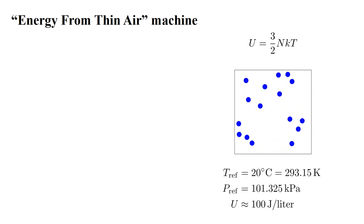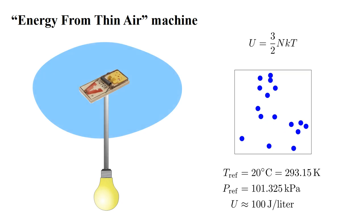At twenty degrees Celsius, in standard atmospheric pressure, this works out to around one hundred joules per liter of gas. It seems like, maybe, we should be able to devise a machine that can trap this energy, and use it to, say, power our lights.